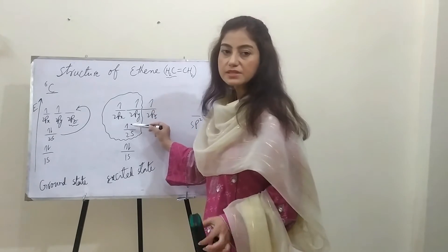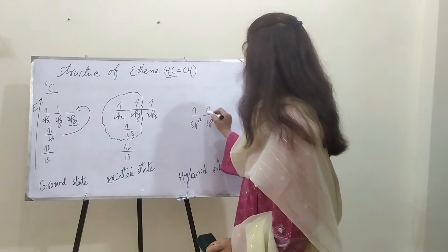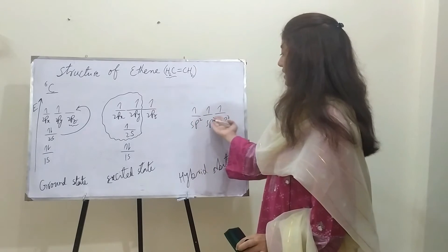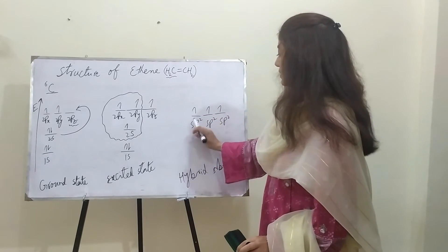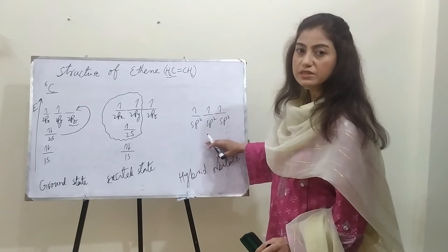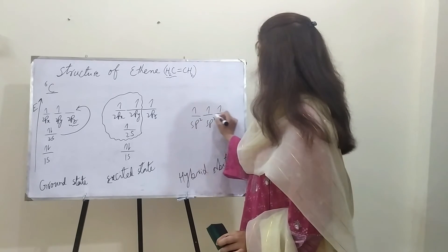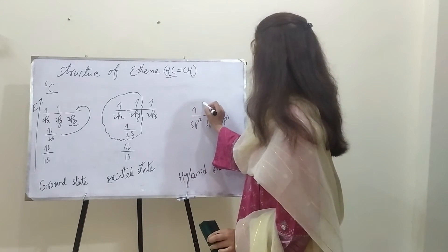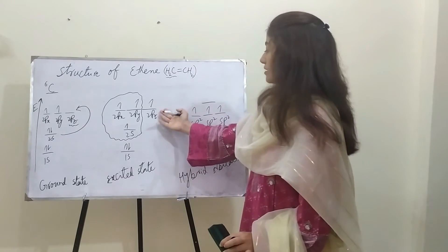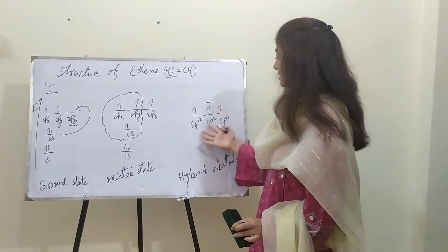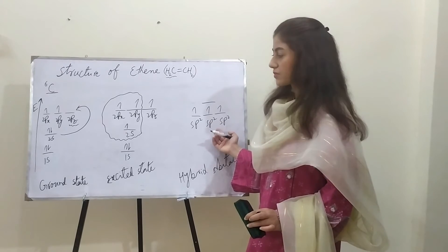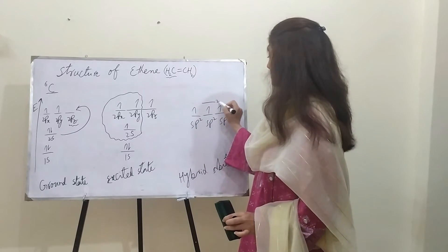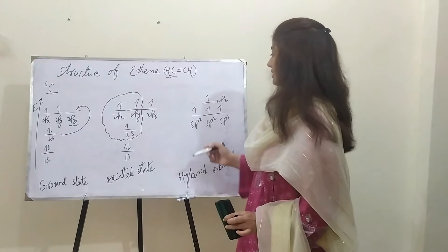Since all three sp2 orbitals are partially filled, there would be only one electron in each. These are at the same energy level — we cannot draw one of them at a higher and two at a lower energy level, that would be totally wrong. These are at the equal energy level, and the remaining 2pz would be at a bit higher energy level. Its energy level would be the same as in the excited state — 2pz has one electron.